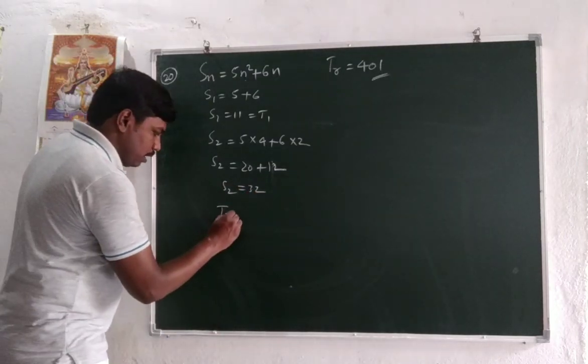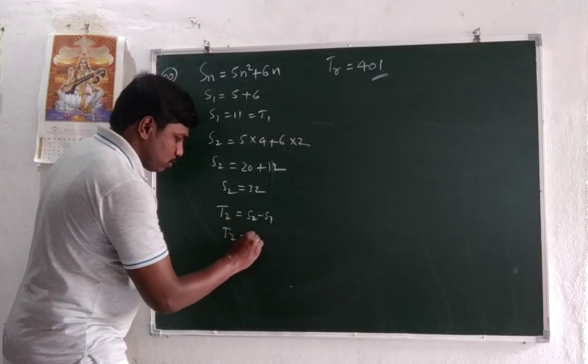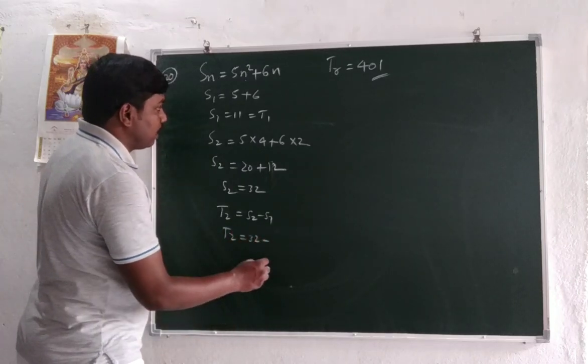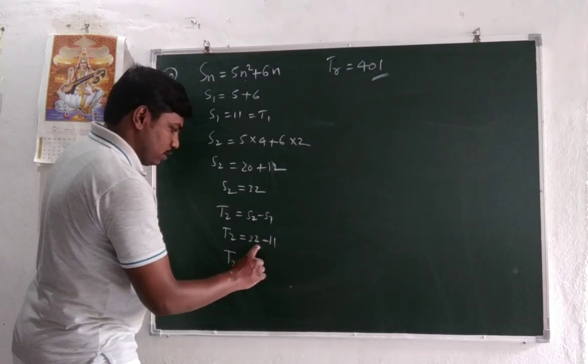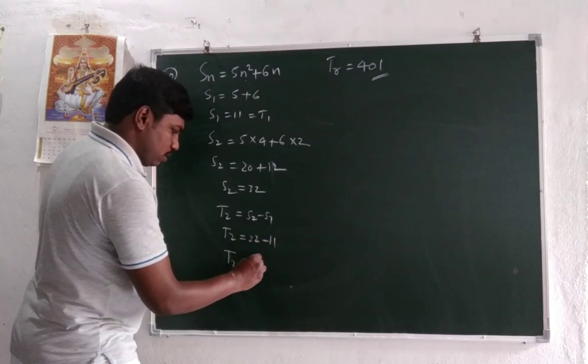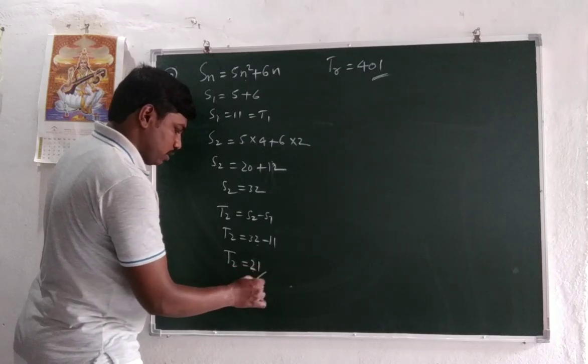What is T2? T2 is defined as S2 minus S1. So T2 is equal to S2 which is 32, minus S1 which is 11. So T2 is equal to... 32 minus 11 is 21.